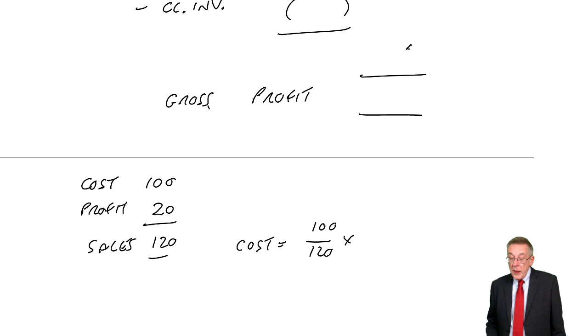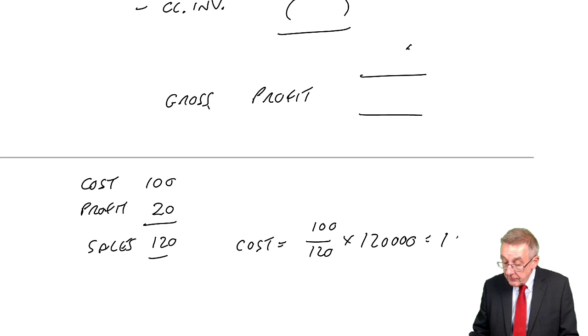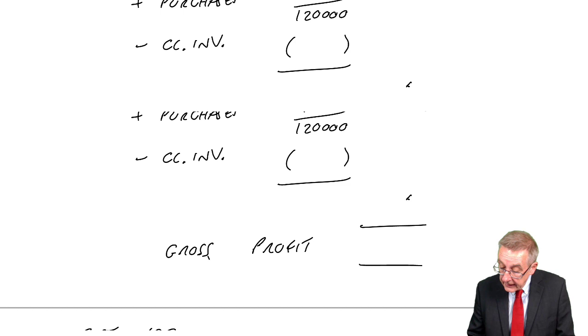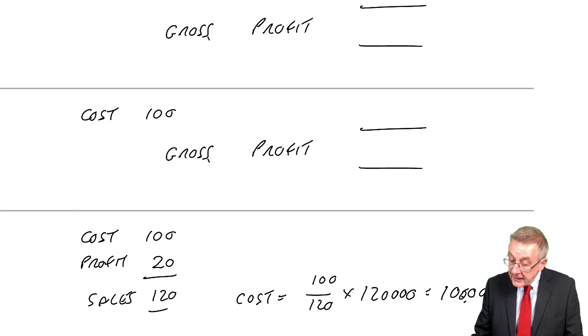Well, I know what the sales were, they were 120,000. And so what must the cost have been? The cost must have been 10,000. Let's go back and fill that in. Sorry, 100 over 120, it's 100,000, I missed a zero. The cost must have been 100,000. So let's fill it in.